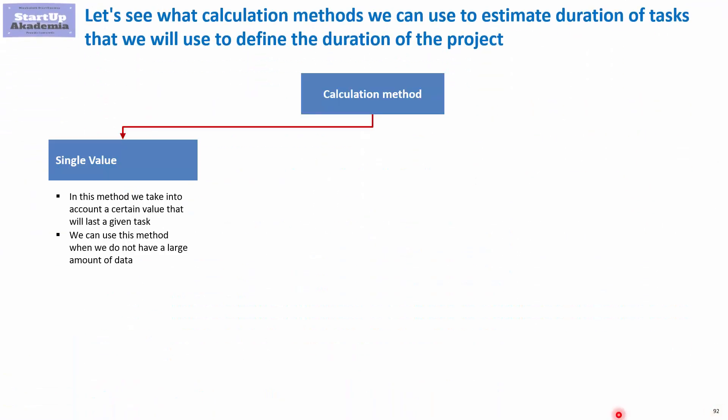We can have just a single value, so we ask, for example, one expert how long it will take us to complete a certain specific task. This is the worst method because one observation is not statistically significant.